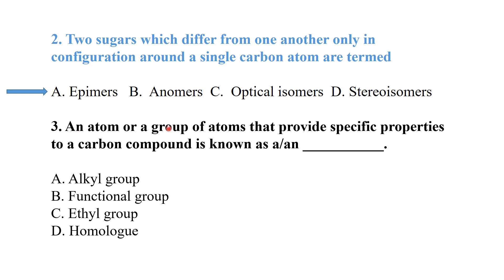An atom or a group of atoms that provides specific properties to a carbon compound is known as? The options were alkyl group, functional group, ethyl group, and homolog. The correct answer is the definition of a functional group — this is an organic chemistry question.